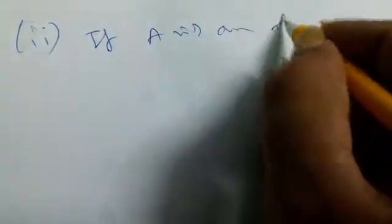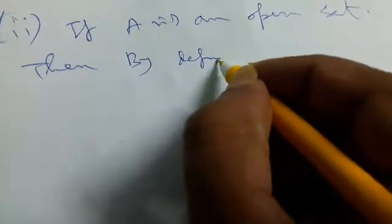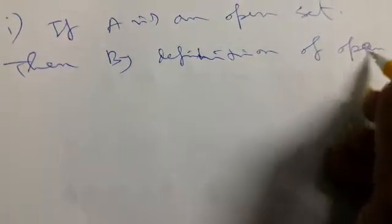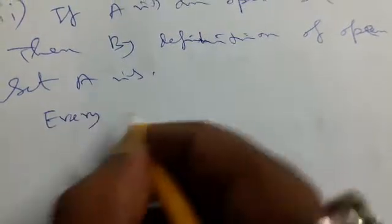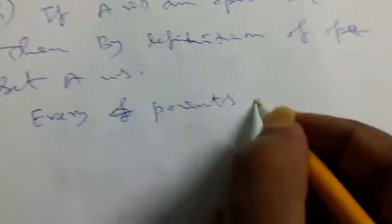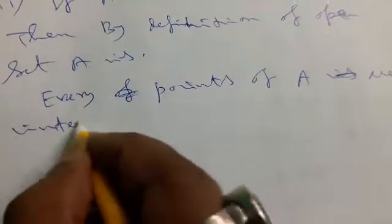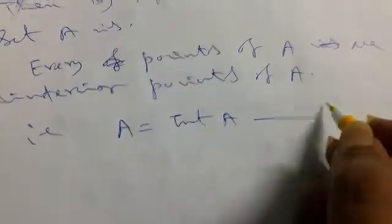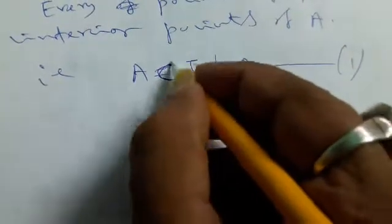Now for the second criteria: if A is an open set, then by definition of open set, every points of A are interior points of A. That is, A is subset of interior of A. It is the necessary part, given by 1.